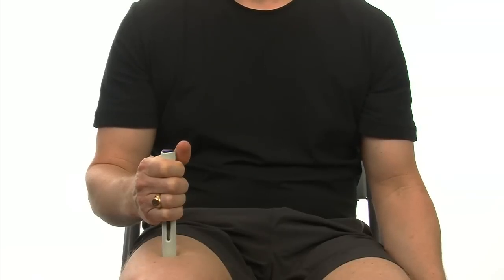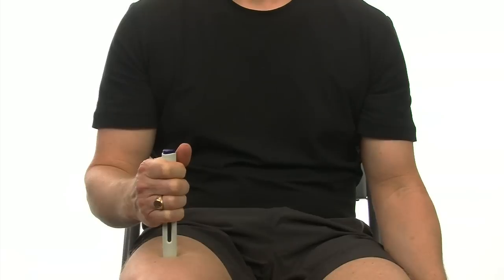Press the activator button on the auto-injector to activate the device. The injector will now inject the medicine under the skin. Some auto-injectors will click when the injection is finished. However, it's best to count to 15 slowly: 1-1000, 2-1000, 3-1000, etc.